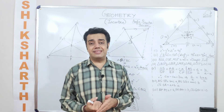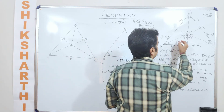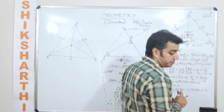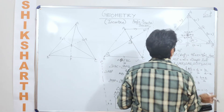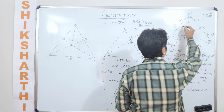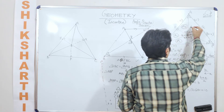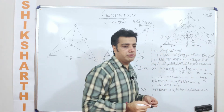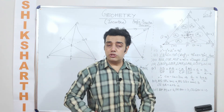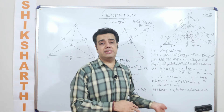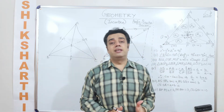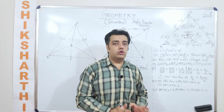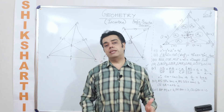We know that congruent triangles have equal areas. So if this area is A1, this area will also be A1. If this area is A2, this area will also be A2. If this area is A3, this area will also be A3. Two congruent triangles will have equal areas — as we established in the congruency video — and two triangles having equal areas does not necessarily mean they are congruent, but two congruent triangles will necessarily have equal areas.